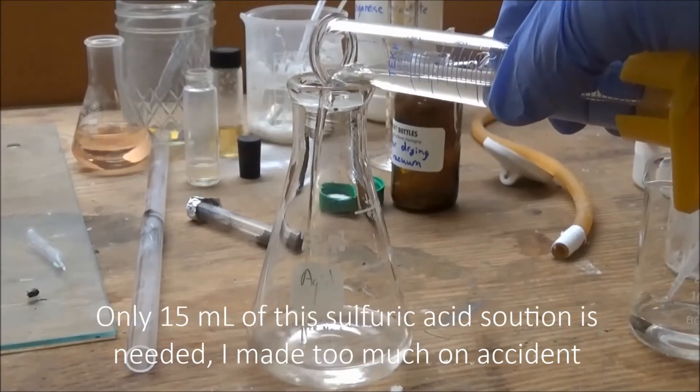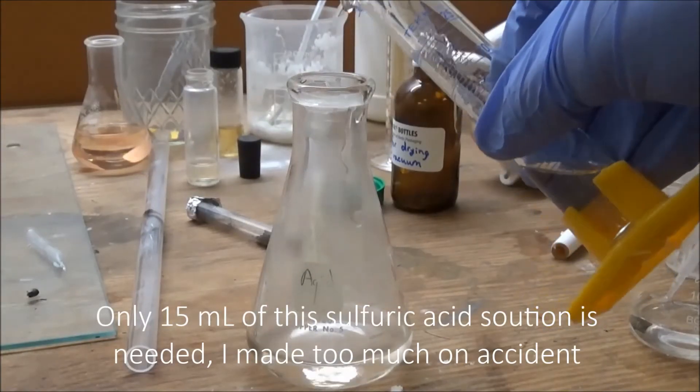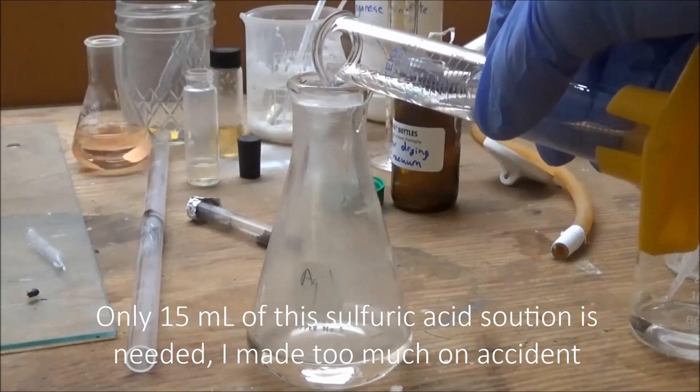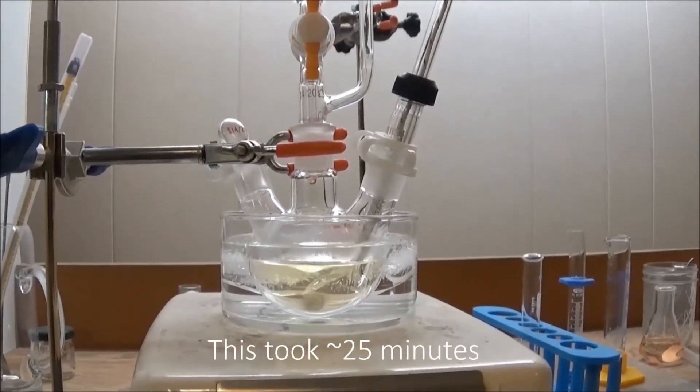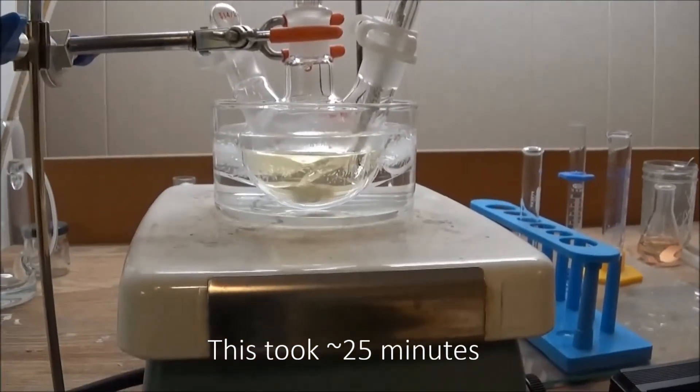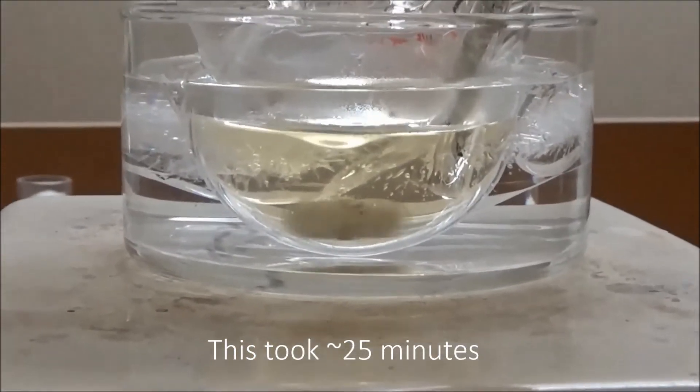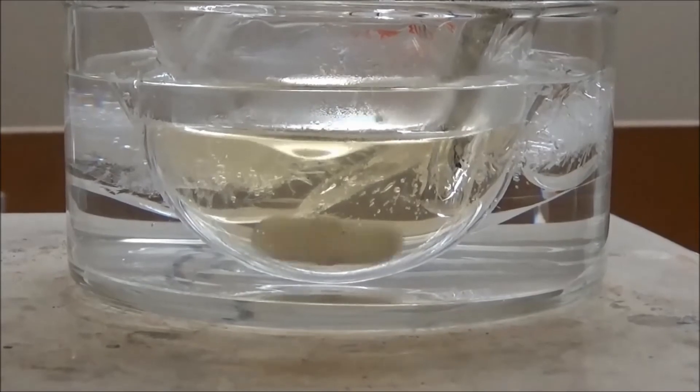While the addition was taking place, I prepared a 50% by volume sulfuric acid solution. Eventually, I added all of the sodium nitrite solution to the flask, and everything dissolved. I then let it stir like this for about 15 minutes.